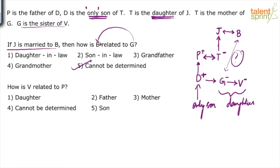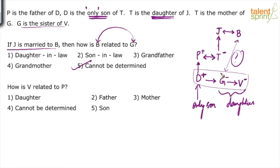Remember, if these two are interchanged — meaning if the question says how is G related to B — then the answer can be determined. G is the granddaughter, while grandfather or grandmother is not known. But G definitely is the granddaughter, so 'how is G related to B?' can be answered: granddaughter. But 'how is B related to G?' cannot be determined. Next: how is V related to P? V is a female person; these three are children of P. V is the daughter of P. So the answer would be option 1: daughter.